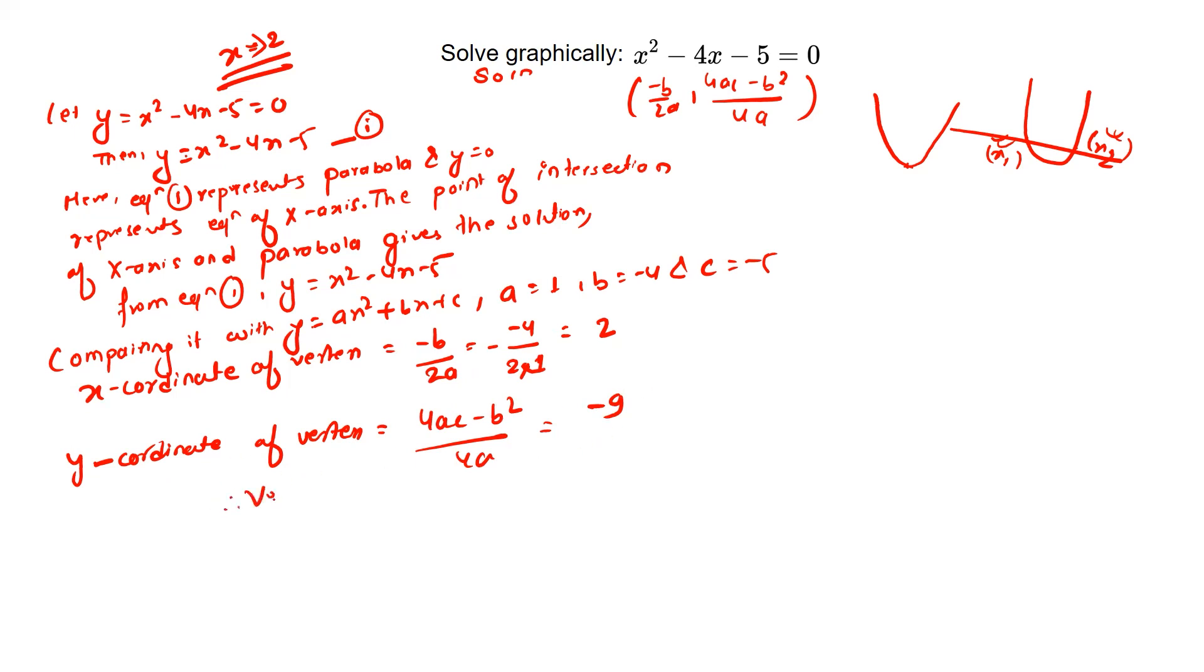Therefore, the vertex of the parabola equals 2, minus 9.